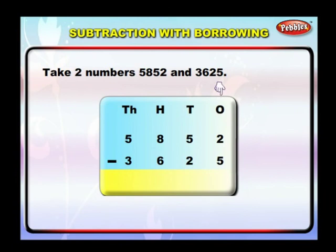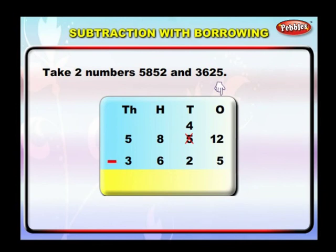Subtract the ones. Here we cannot subtract 5 from 2 because 5 is greater than 2. In that case, we borrow 1 from the tens of the first number, that is from 5. Now 2 becomes 12. So 12 minus 5 is equal to 7. Write 7 below the ones column.